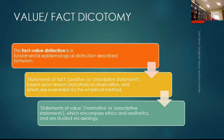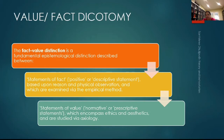The first issue I want to flag is the fact-value dichotomy. The fact-value dichotomy is a fundamental epistemological distinction between statements of fact — positive or descriptive statements based upon reason and physical observation, examined via the empirical method. For example, a fact is that India's foreign policy has recently had issues with China on the Galwan border — India and China have had skirmishes between each other.